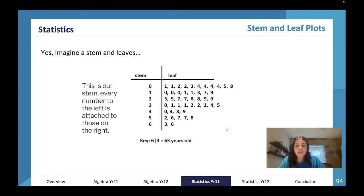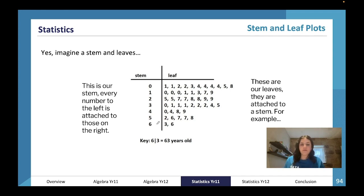Stem and leaf plots—you're going to imagine stems and leaves. Every number on the left is a stem and every number on the right is a leaf attached to that stem. It's a really easy way of not having to write out the first number every single time. So instead of writing 52, 56, 57, 57, 58, you can just write five, then two, six, seven, seven, eight. In this example, that's 63, that's 66, that's 10, that's 31, that's 49, and so forth.